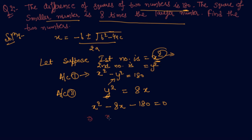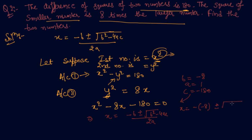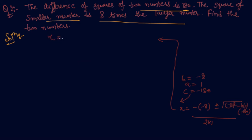Using the formula x equals minus b plus minus root of b square minus 4ac upon 2a: the value of a is 1, b is minus 8, and c is minus 180. Substituting these values we get minus of minus 8 plus minus root of minus 8 square minus 4 into 1 into minus 180, upon 2 into 1. So this gives 8 plus minus root of 64 plus 720.